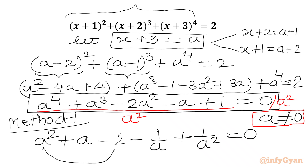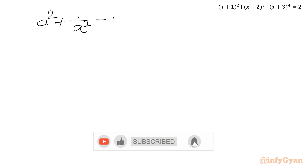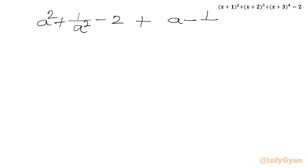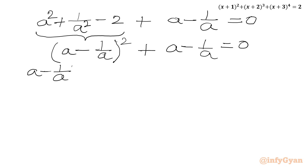Now I will consider these three terms together and these two together. So I will write a square plus 1 over a square minus 2, then a minus 1 over a equal to 0. Here I can write a square plus 1 over a square minus 2 as a minus 1 over a whole square — since a square plus 1 over a square minus 2 times a times 1 over a gives us a minus 1 over a whole square — plus a minus 1 over a equal to 0. Now we will take a minus 1 over a as common.